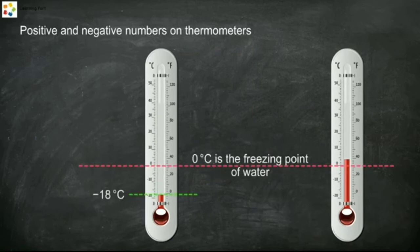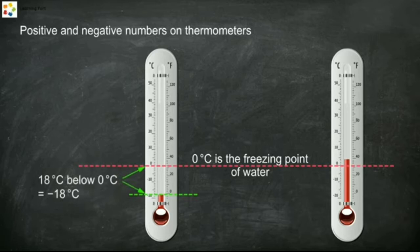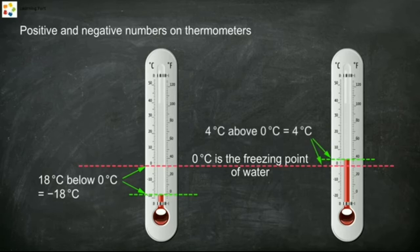Negative eighteen degrees Celsius means it is eighteen degrees colder than the freezing point of water — it is eighteen degrees Celsius below zero. Four degrees Celsius means it is four degrees warmer than the freezing point of water — it is four degrees Celsius above zero.